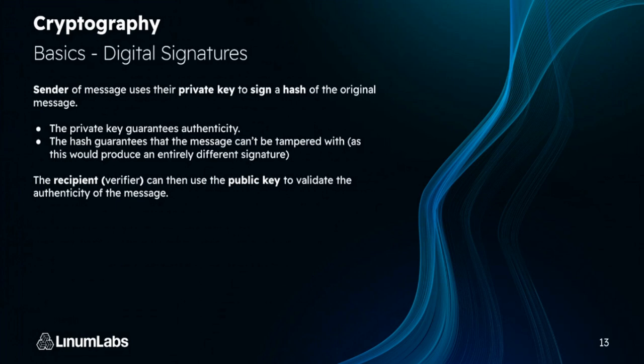Digital signatures: the sender uses their private key to sign a hash of the original message. This signed hash provides guarantees of authenticity — confirming that I'm the one who sent this message. The hash guarantees the message can't be tampered with, because that would produce an entirely different signature. Remember, hashes yield a unique output. The recipient or verifier can use the public key to validate the authenticity of the message and verify it was from the intended sender.